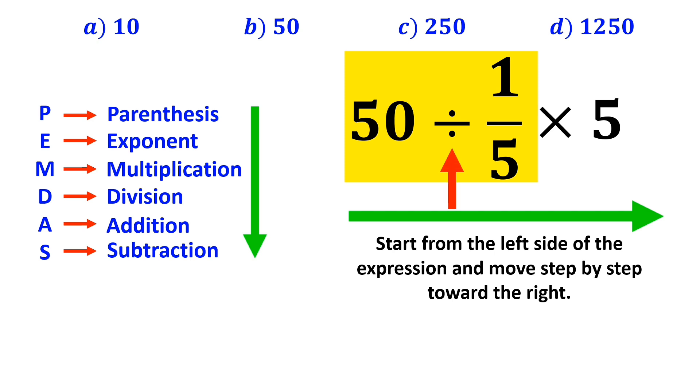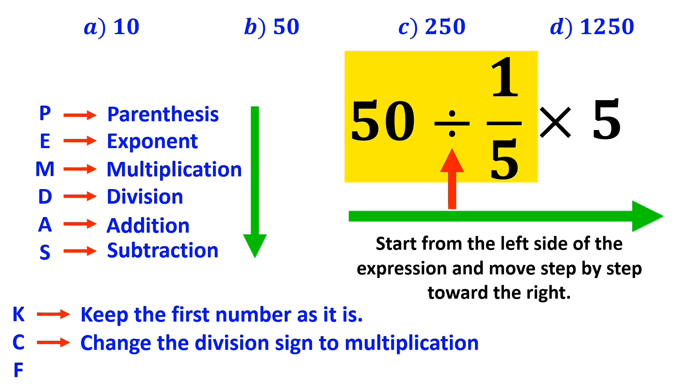Whenever we come across a division sign between two terms, the best thing to do is to apply the KCF rule. In this rule, K means keep the first number as it is, C means change the division sign to multiplication, and F means flip the second fraction.